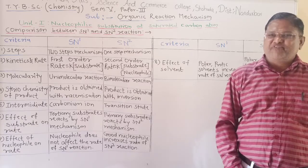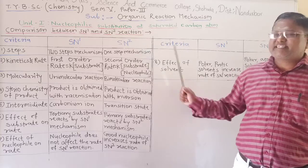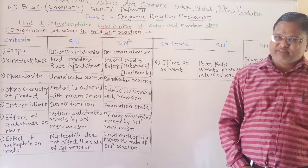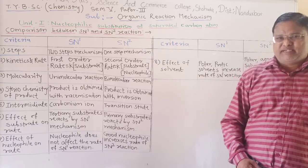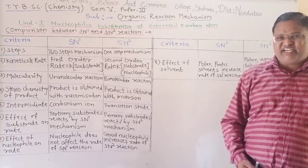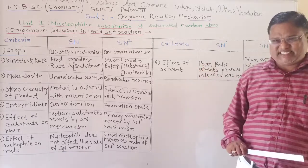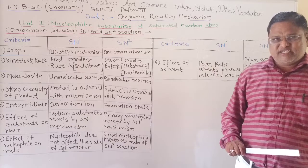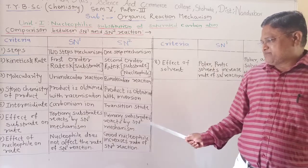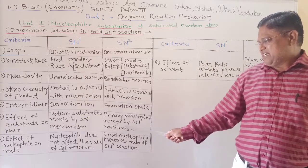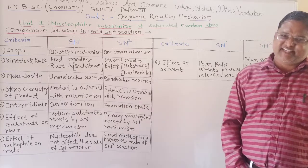Therefore, the attack of the nucleophile is prevented, and the rate of SN2 reaction decreases. So in case of tertiary substrate, the rate of SN2 reaction decreases. In case of primary substrates, the rate of SN2 reaction increases.